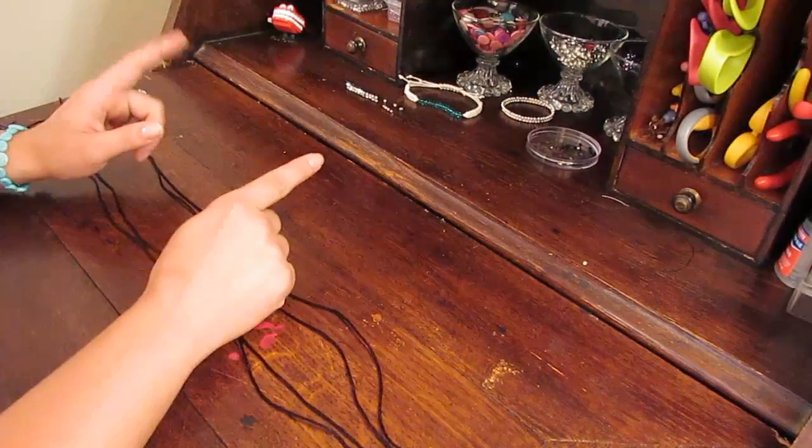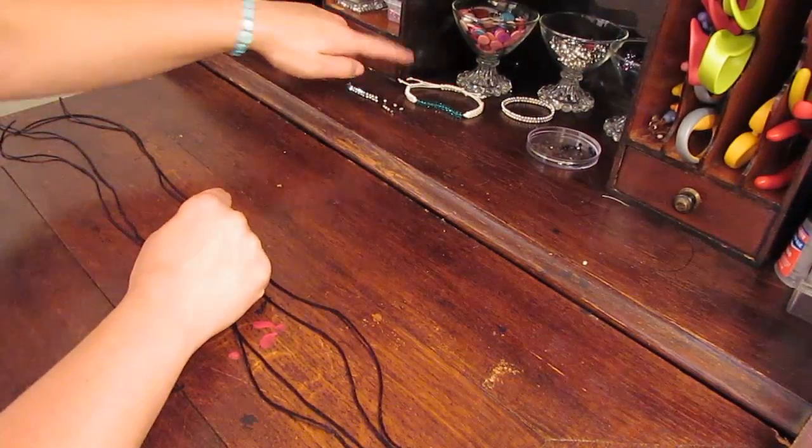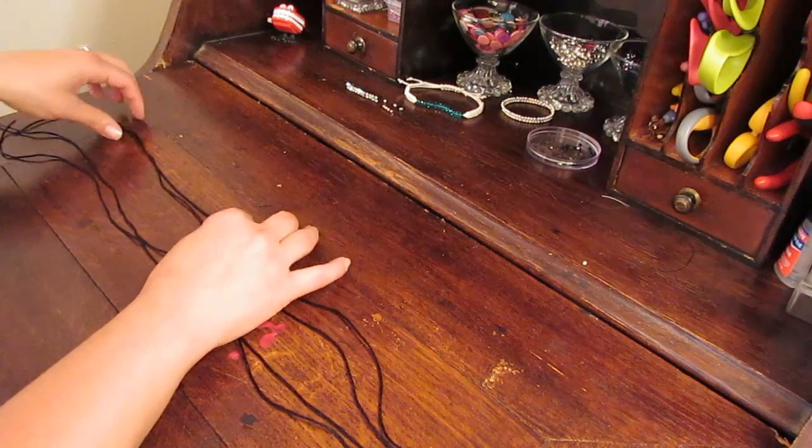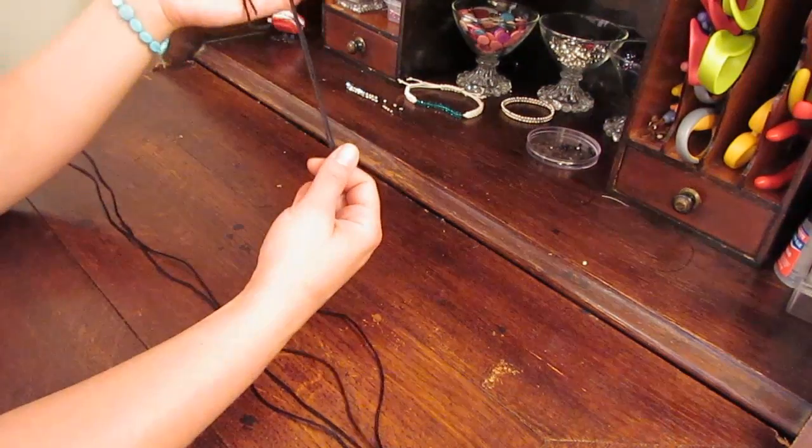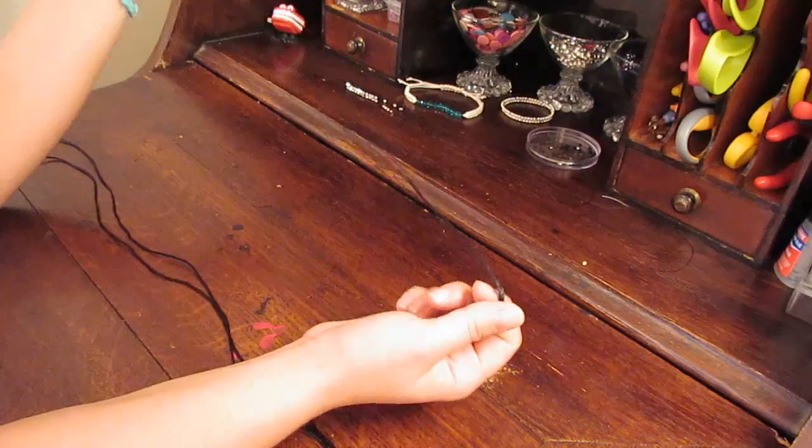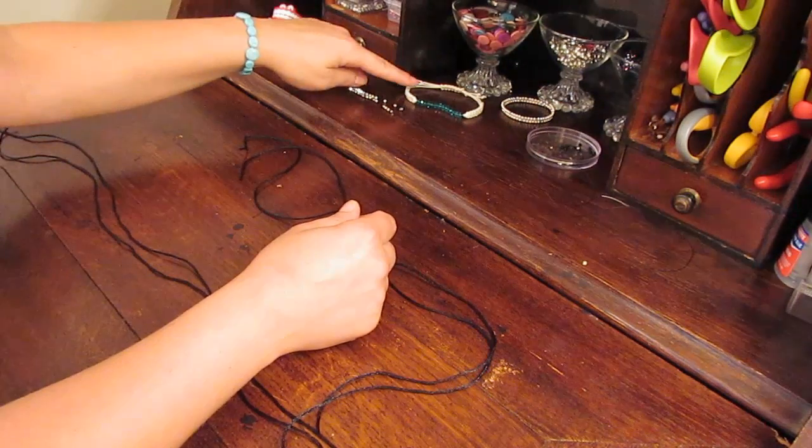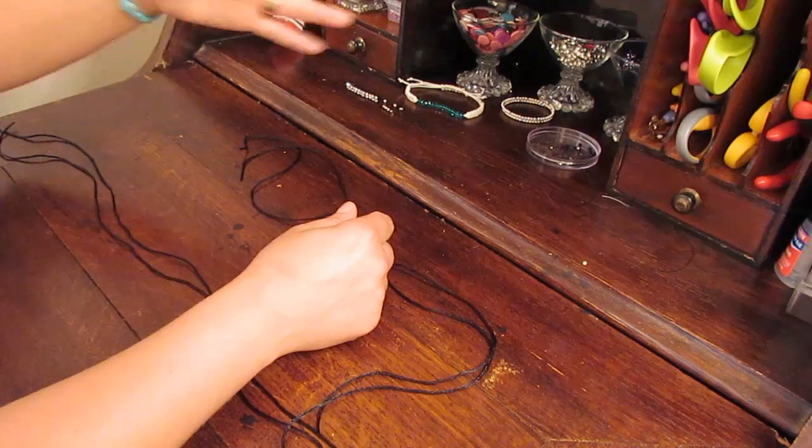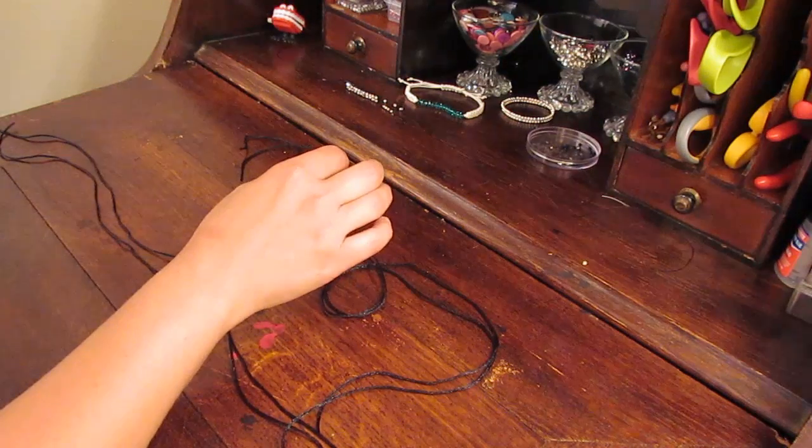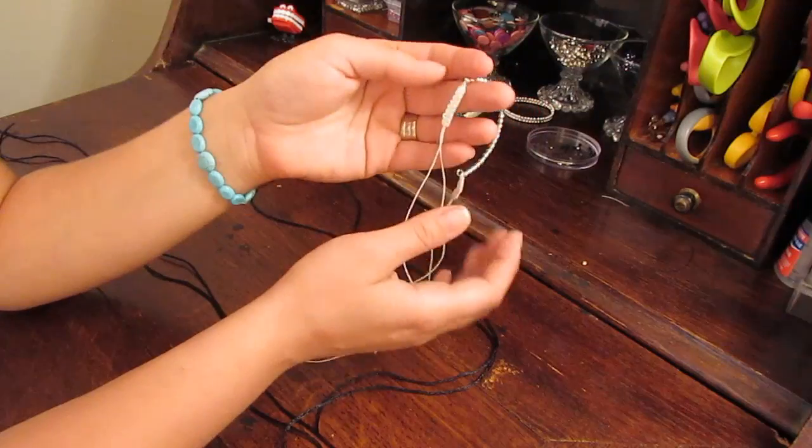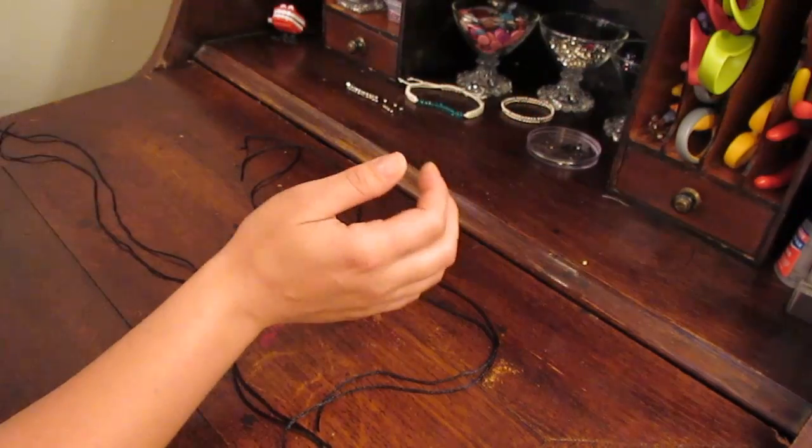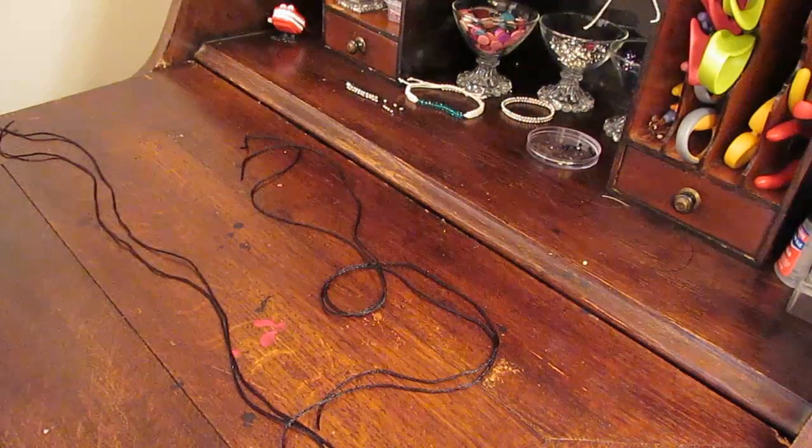I wanted to attempt this bracelet today on a suede cord but I just didn't have the color I wanted. So I'm going to try this rat tail cording and you'll still get the technique of it down. This one's on cotton cording. You can use wax. I started this one on wax thread, which is nice too, but I was going for more of a chunky look.